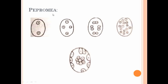In tetrasporic embryo sacs, there are only nuclear divisions, no cellular divisions. The megaspore undergoes nuclear division to form the binucleate stage, then the tetranucleate stage. In the four-nucleate stage, one nucleus is at the micropylar end, one at the chalazal end, and two are at the lateral sides. This four-nucleate stage undergoes further nuclear division to form the 8-nucleate stage, then again to form the 16-nucleate stage.